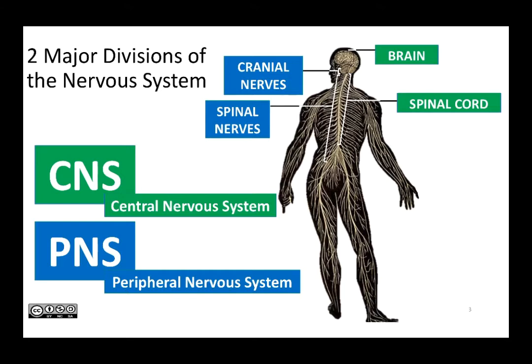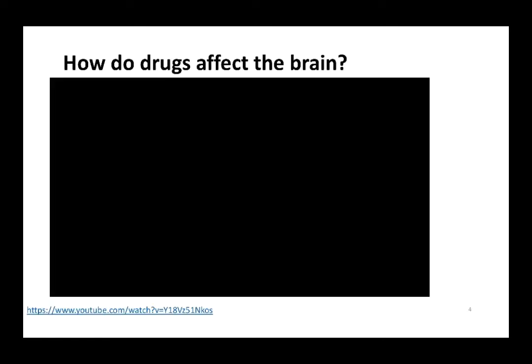There are two major divisions of the nervous system — lots of subdivisions, but two major divisions. The central nervous system, or CNS, and the peripheral nervous system, or PNS. The central nervous system is composed of the brain and the spinal cord, both of which are encased in bone as a protective measure. The peripheral nervous system is made of two sets of nerves marked off by where they originate: cranial nerves originate from the brain and brainstem, and spinal nerves originate from the spinal cord.